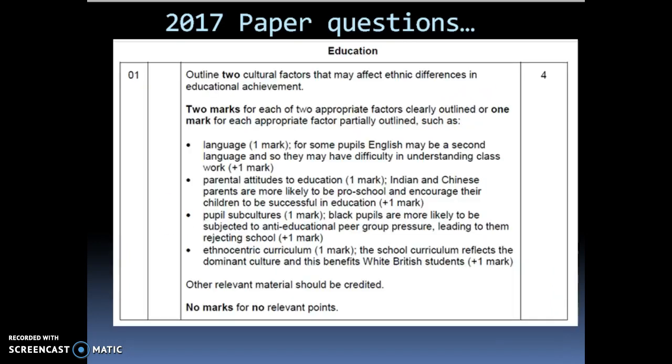So, let's have a look at the mark scheme. As you can see, language was one of the common ones. Now, here they are indicating that this is clearly different from speaking in the restricted code, which some people did start to write, that some students will have, but that is very much class as well. So, if you just indicated that speaking in the restricted code because English isn't your first language, that would have scored marks and that means that they will have difficulty in understanding the class work, which is implying that they're not going to achieve.